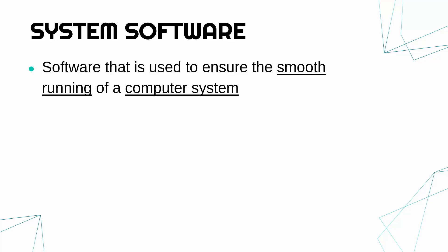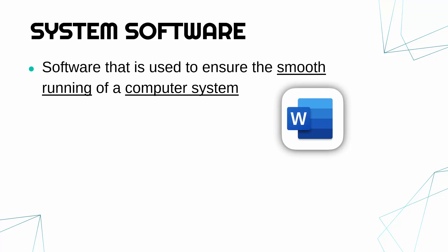So, system software. System software is sort of the opposite to application software. We've got application software designed for the end user, doing tasks which you don't necessarily need a computer to do. Whereas system software is used to ensure the smooth running of a computer system — you do need a computer. This software only really exists because computers exist. Something like Microsoft Word — we could write letters and documents on paper, we don't need a computer, so therefore it's application software.